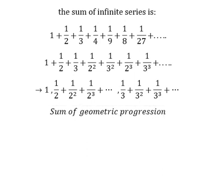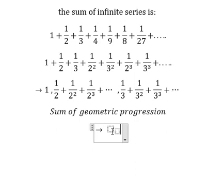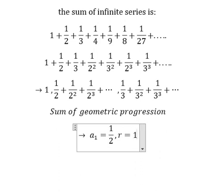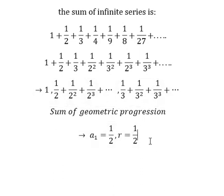Because this is 1 over 2, we will use a₁, the first term, equal to 1 over 2, and the common ratio is 1 over 2 because we multiply by 1 over 2. That's why we have 1 over 2 squared. Now the formula